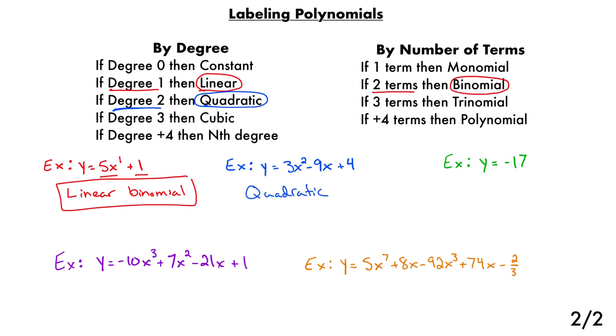And then we look for how many terms there are. Here's one term. Here's a second term. Here's a third term. Remember, each term is broken up by either addition or subtraction. So this has three terms, which we call a trinomial. So this is a quadratic trinomial.